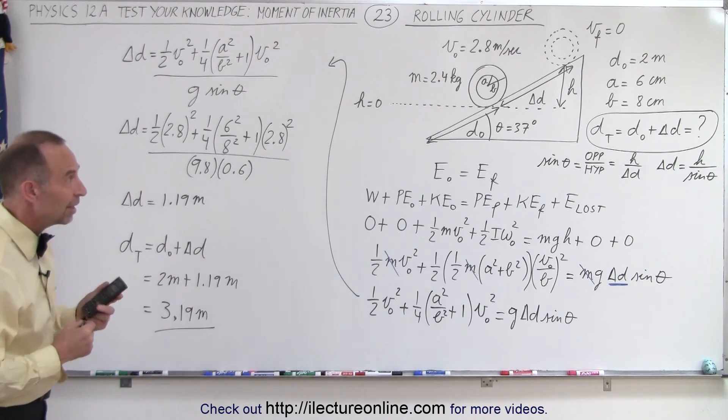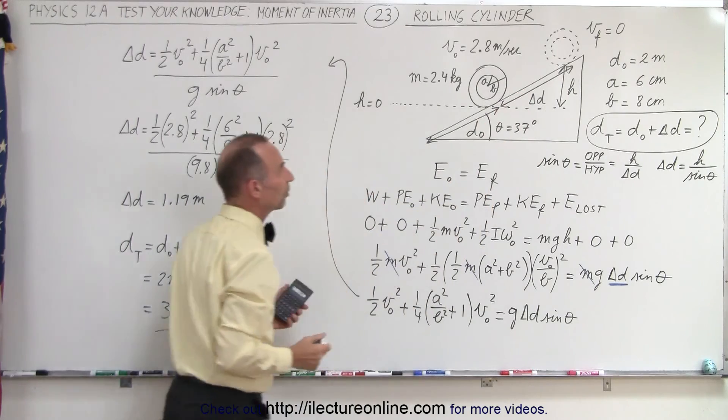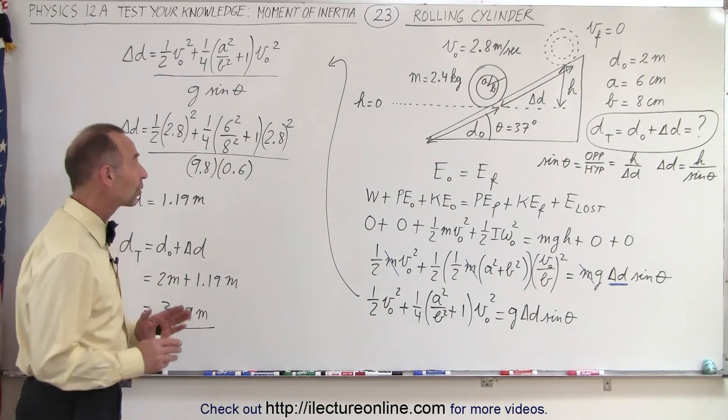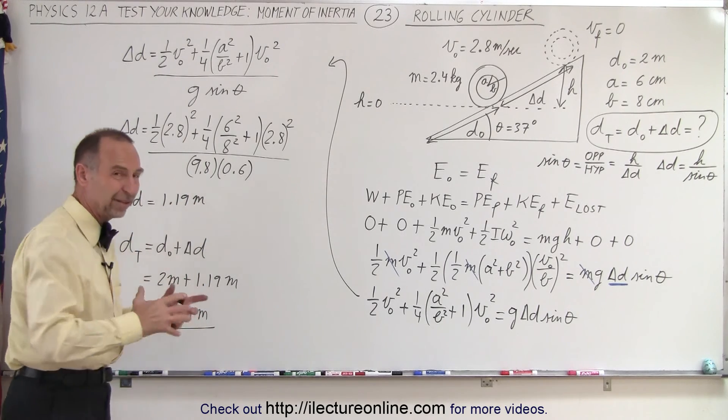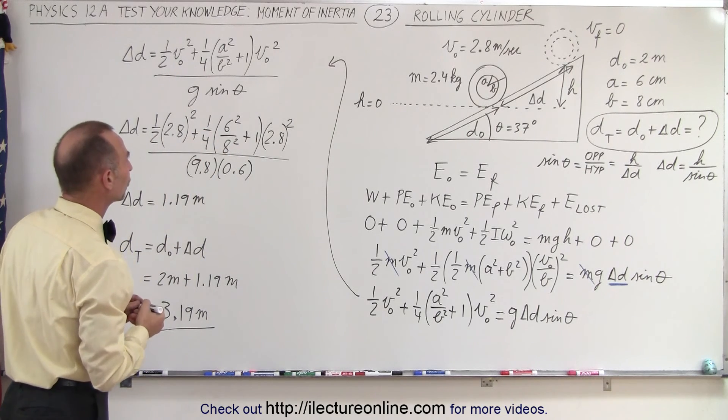And you can see that after it's already gone up 2 meters with a speed of 2.8 meters per second, it goes another 1.19 meters up the incline. Now, for those who are curious about how we end up with meters here, of course, we understand that distance should be in meters, let's see and make sure that we got the units correct.